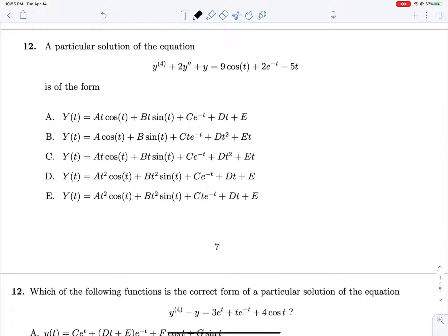Problem 12, we are looking for a particular solution, or well, the form of a particular solution to this equation here. Let's solve our characteristic equation. R to the fourth plus 2R squared plus 1 equals 0. This is R squared plus 1 squared. This gives us R squared equals negative 1, that's R equals plus or minus I with a multiplicity of 2. Because things have a multiplicity of 2, our characteristic solution, Yc will be C1 sine T plus C2 cosine T plus C3 T sine T plus C4 T cosine T.